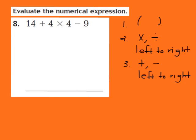Going back to step 1 — parentheses — I look at my expression and notice there are no parentheses, so I move on to step 2. Step 2 says multiply or divide from left to right, and I see there is multiplication in this expression. So I'm going to solve the multiplication first: 4 times 4 gives me 16.